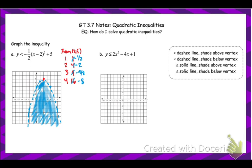Let's graph this next one. We can either write it in vertex form by completing the square, or we can find the vertex using negative b over 2a and plugging that value in. I'll go ahead and do completing the square, just for review.